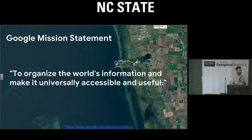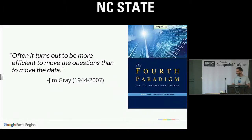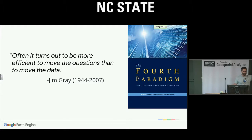It is Google's mission to organize the world's information and make it universally accessible and useful. We see Earth Engine as the geospatial manifestation of this mission statement — we want to organize the world's satellite imagery and other geospatial information and make all of it universally accessible and useful. It is much easier to move your question to the data than it is to move the data to you. Google downloads and hosts all these data on Google infrastructure, and then you move your question to the data and use Google servers to get an answer.